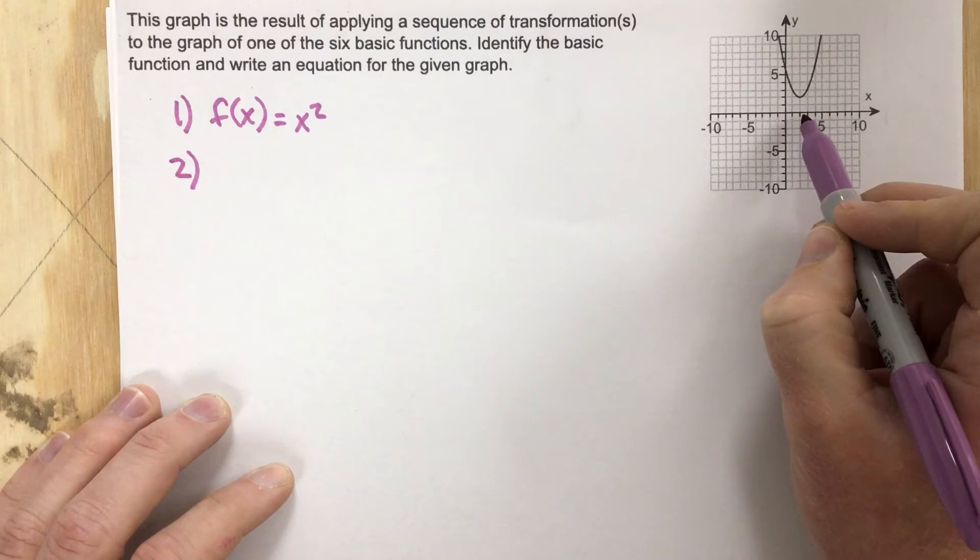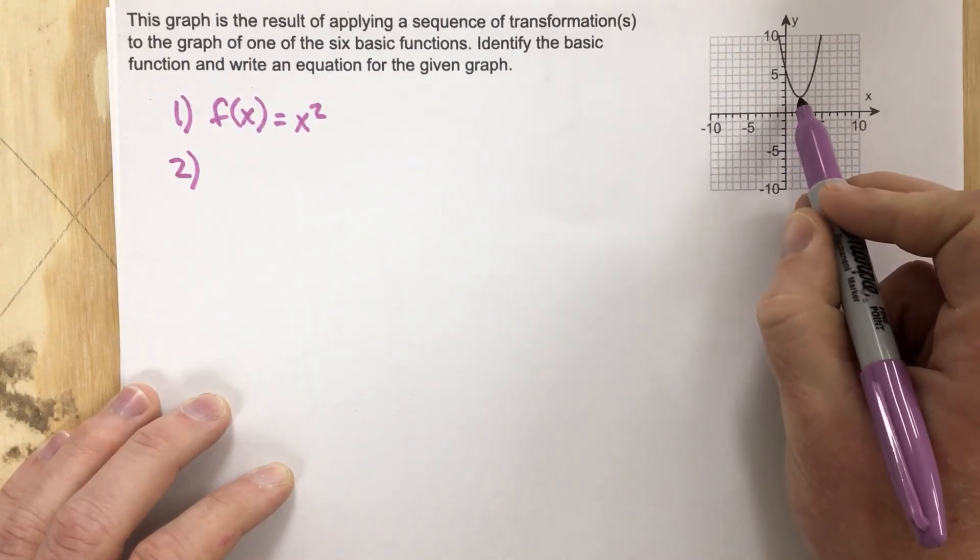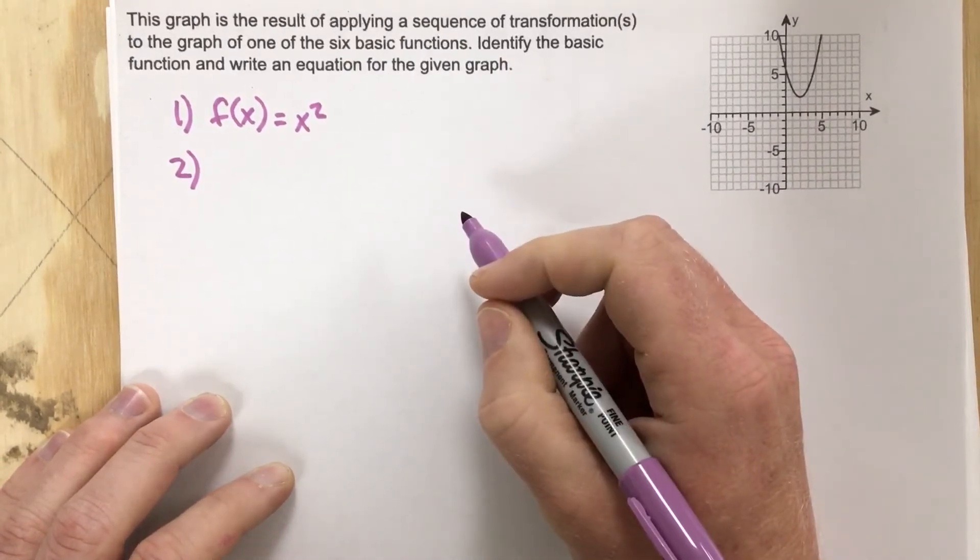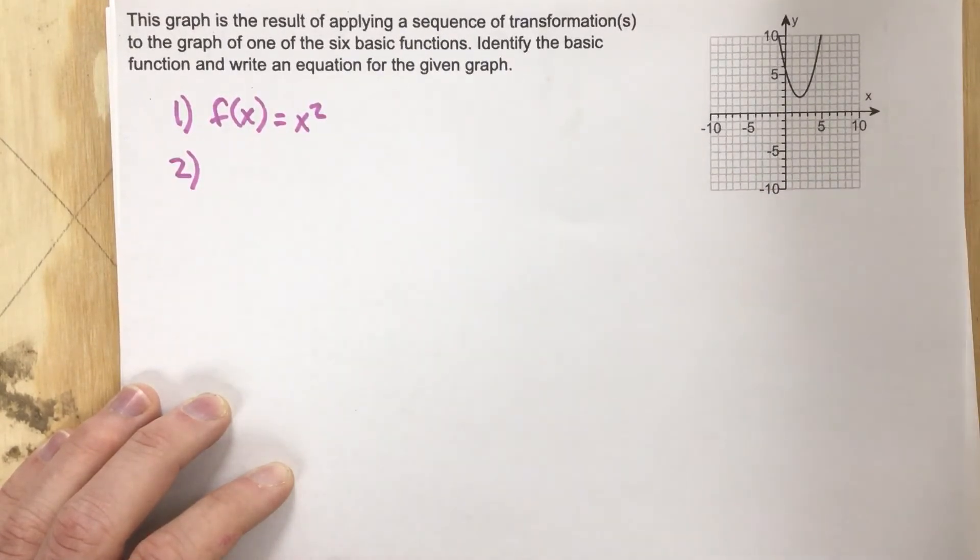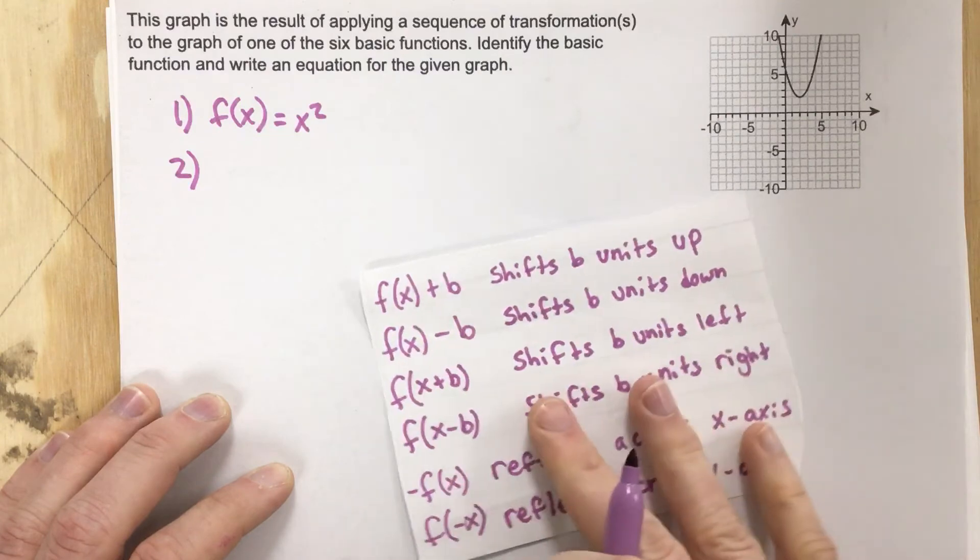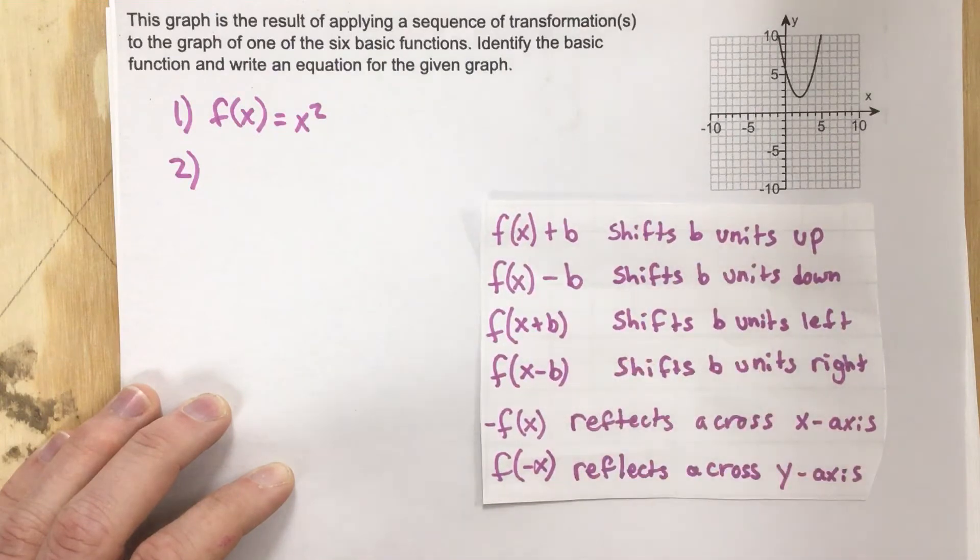You can see then it's been shifted to the right and it's been shifted upwards. So because it's been shifted to the right and upwards, we need to take a look at our transformations which you can see right here.